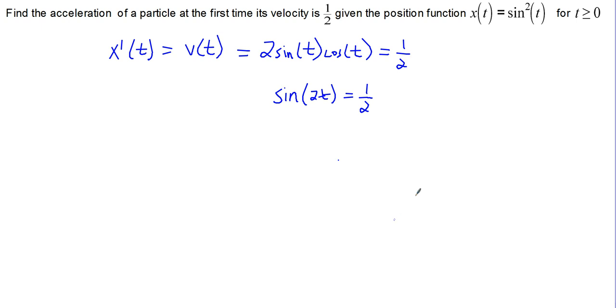The first time that sine for t greater than or equal to zero is equal to one-half is at an angle of pi over six, so we will set our angle, which in this case is 2t, equal to pi over six. This gives us a t value of pi over 12.